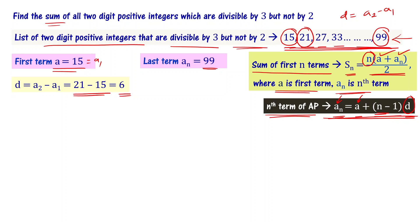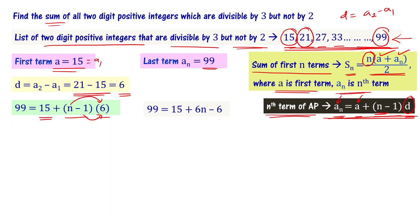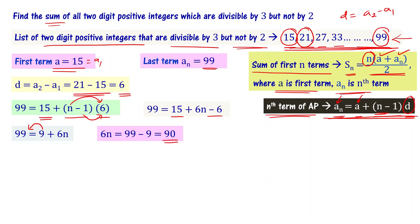Substituting into the formula: 99 = 15 + (N − 1) × 6, which gives 99 = 15 + 6N − 6, so 99 = 6N + 9. Therefore, 6N = 99 − 9 = 90, and N = 90 / 6 = 15. So the number of terms is 15.